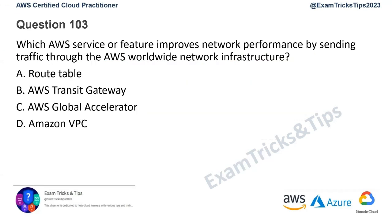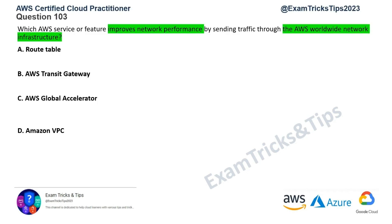Question number 103: Which AWS service or feature improves network performance by sending traffic through AWS worldwide network infrastructure? If you need to go through the AWS worldwide network, your answer is AWS Global Accelerator. It is a service specifically designed to leverage the AWS Global Network for enhanced network performance and optimized traffic routing.